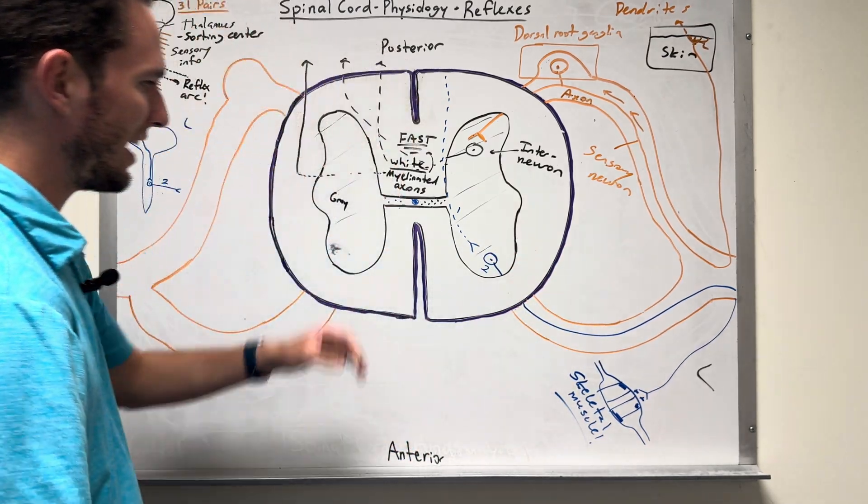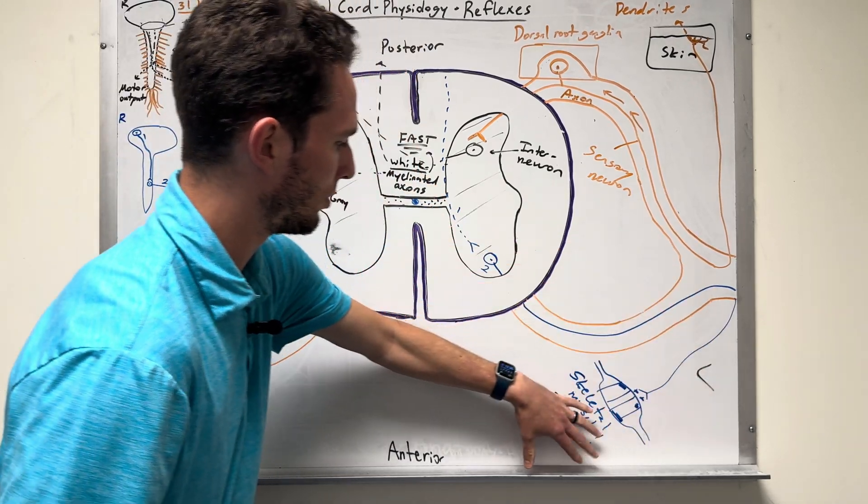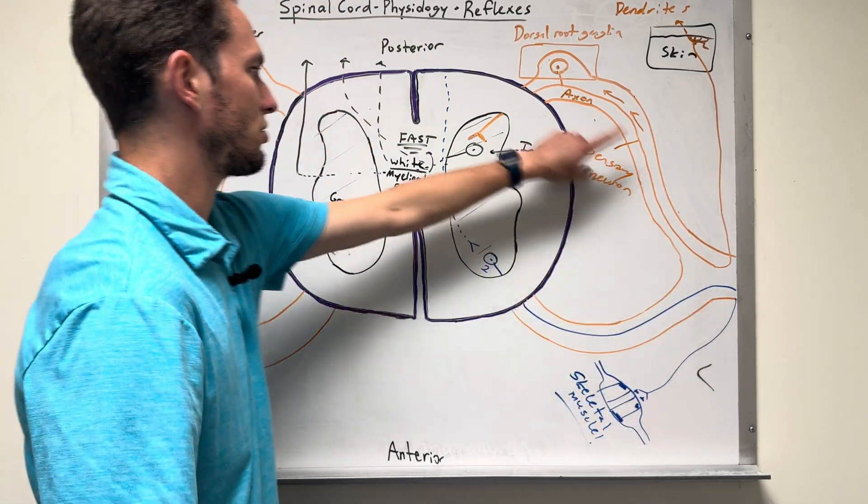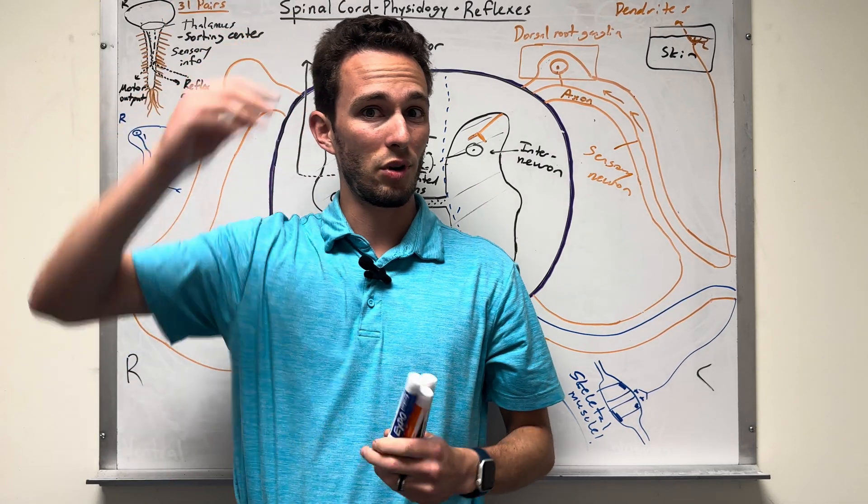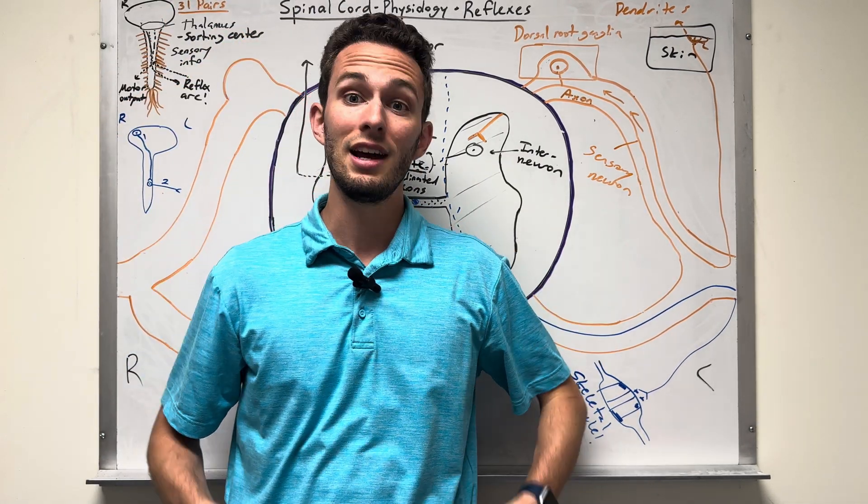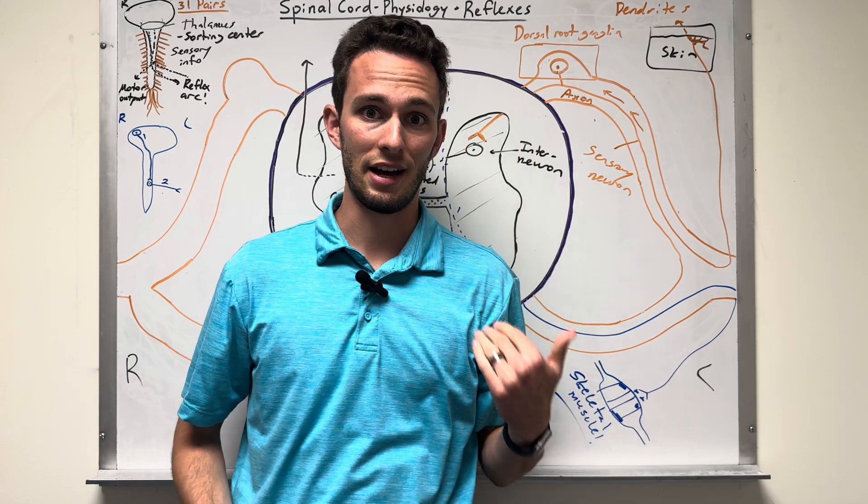So that's how motor output works. We come down from the brain, cross over, go to the lower motor neuron, lower motor neuron then synapses, communicates with skeletal muscle, and it's triggered to contract. Isn't that fascinating? So that's how we have voluntary motor output to skeletal muscle. We got sensory information in, and once again, they both cross over. So we can say the right side of the brain controls the left side of the body, and the same is true on both sides.